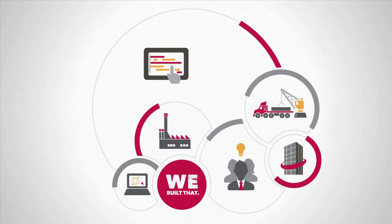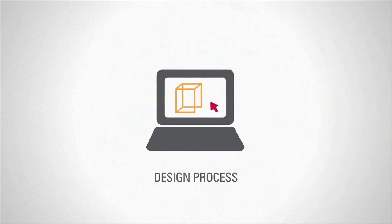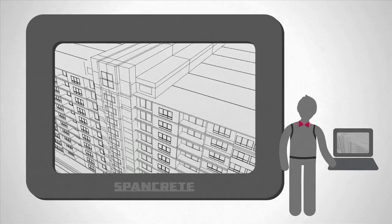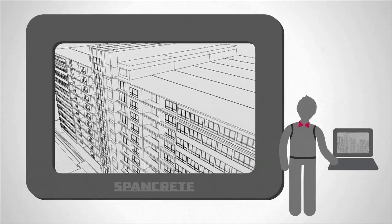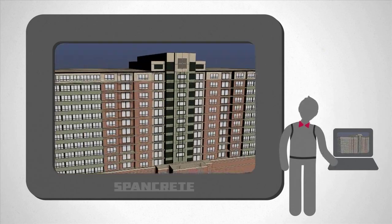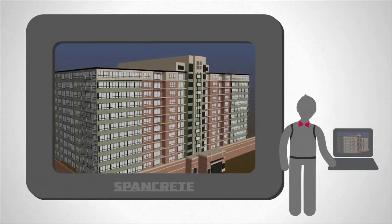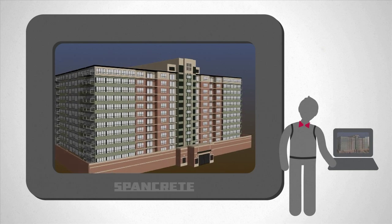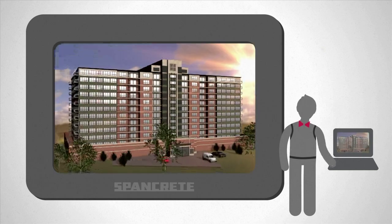During the design stage, our value engineering and building modeling helps identify opportunities for design improvements. Building information modeling lets us generate three-dimensional views of the physical and functional characteristics of your building, allowing engineers and you to examine exact, real-life images of your structure.